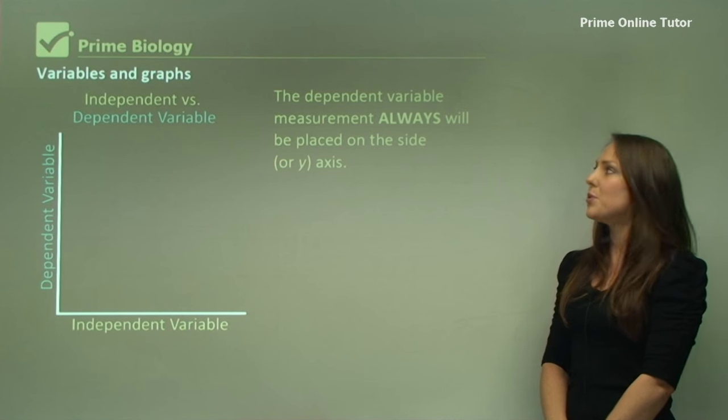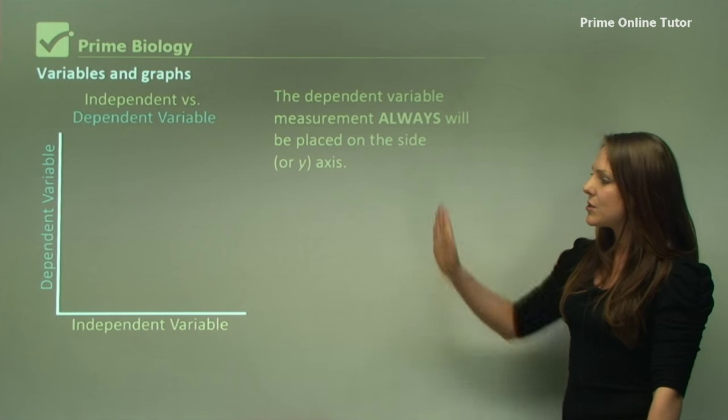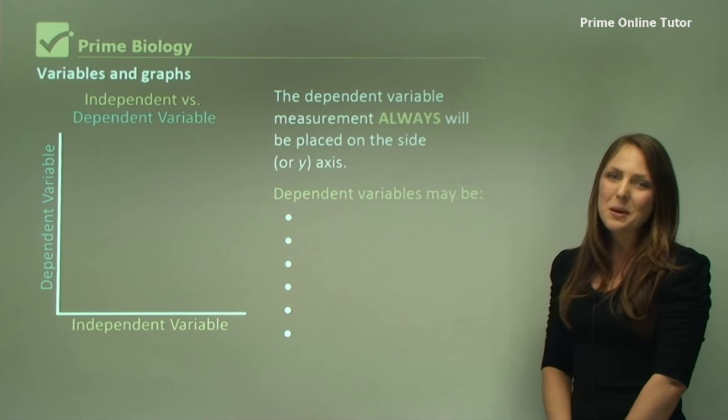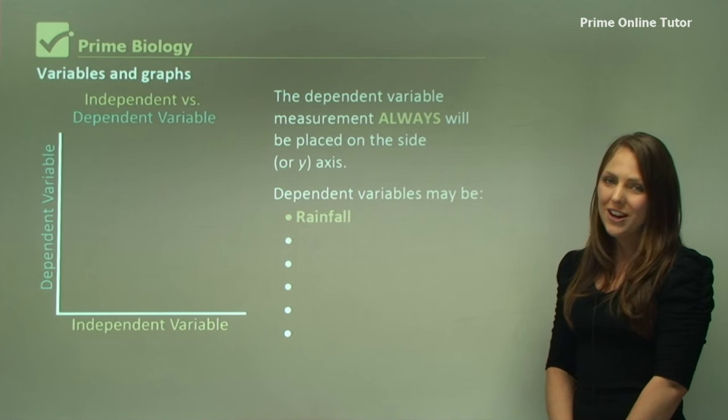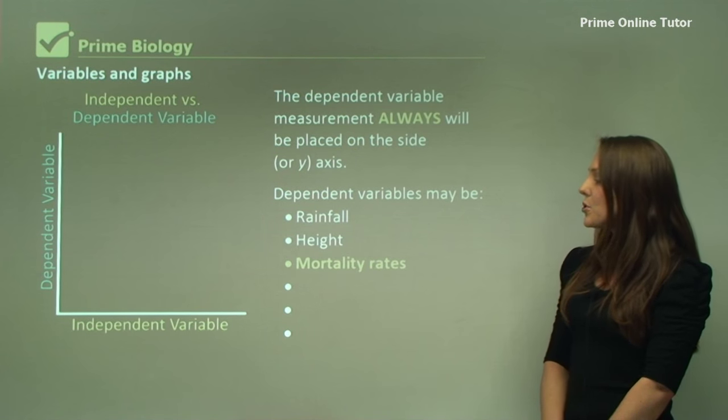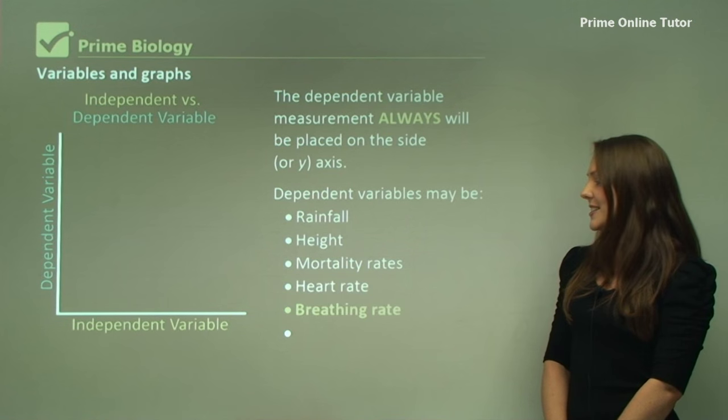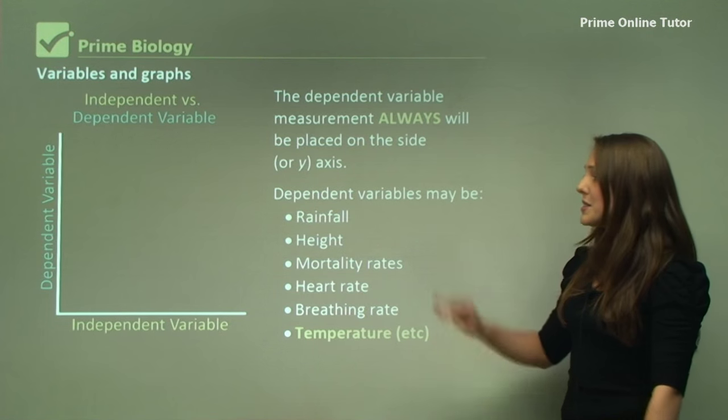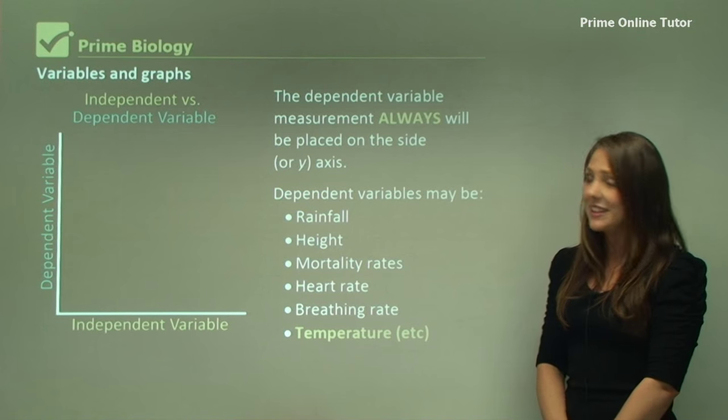The dependent variable will always be placed on the y-axis and some dependent variables might include rainfall, height, mortality rates, heart rate, breathing rate and temperature. And there's plenty more dependent variables out there.